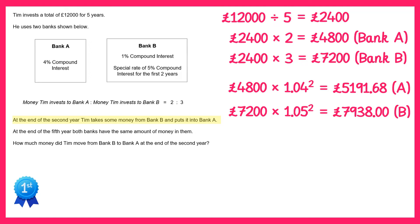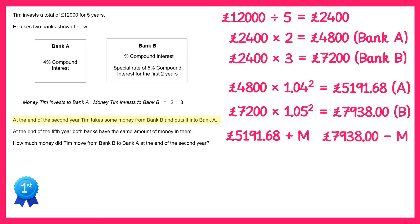Then we're going to take some money from Bank B and put it into Bank A. We don't know how much money it is so I'm just going to call it capital M. After two years I'm going to take M away from Bank B and put it into Bank A. So Bank A will increase by M, becoming 5,191.68 plus M, but Bank B will decrease by M, so 7,938 take away M.